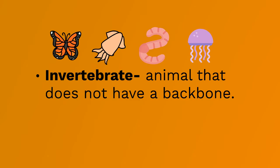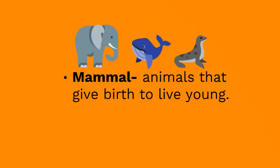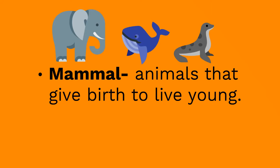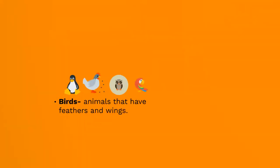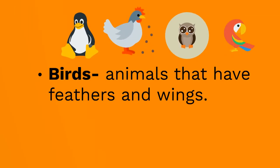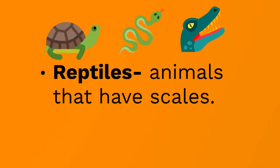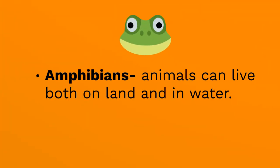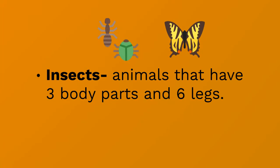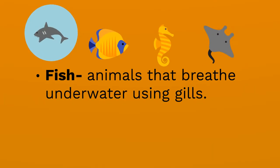Examples of invertebrates include a jellyfish, a worm, a squid, or a butterfly. A mammal is an animal that gives birth to live young — humans are considered mammals, along with elephants, whales, or seals. Birds are animals that have feathers and wings, like chickens, penguins, or parrots. Reptiles are animals that have scales, like turtles, snakes, or alligators. Amphibians like frogs or salamanders can live both in water and on land. Insects have three body parts and six legs, and fish breathe underwater using gills.